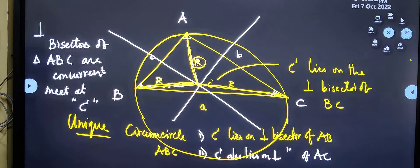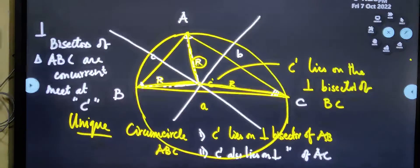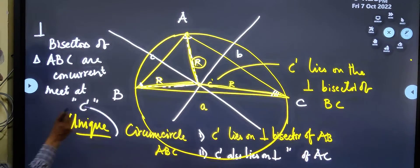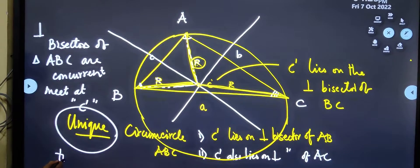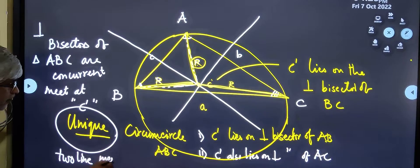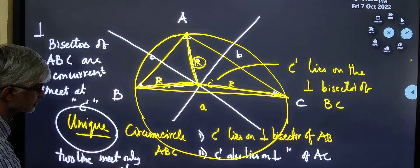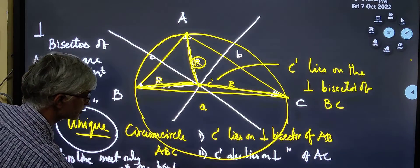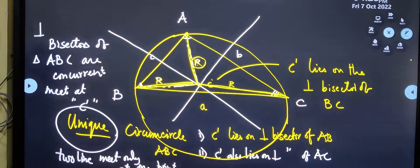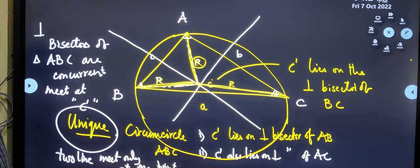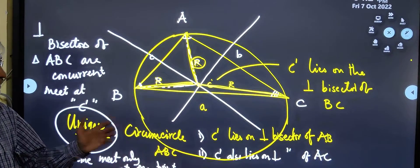Is there anything else interesting? So, we also want to say that this is unique. The reason it is unique is that two lines meet only at one point. So, with these simple observations of basic geometry, we have proved that every arbitrary triangle has a unique circumcircle.